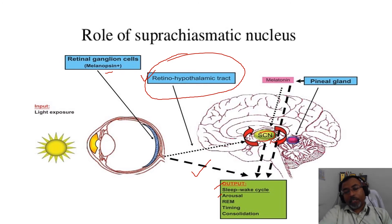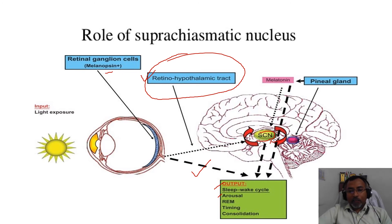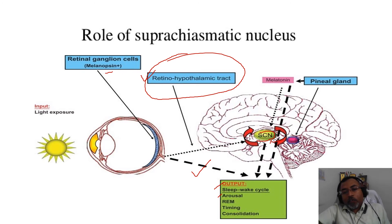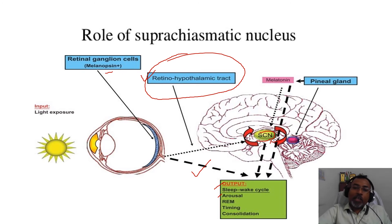From the suprachiasmatic nucleus, a series of connections go to the other hypothalamic nuclei, as well as to the pineal gland. These connections allow the pineal gland to release the melatonin hormone.